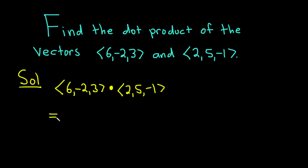The dot product is a very easy operation. All you have to do is multiply the corresponding components and then add the results.